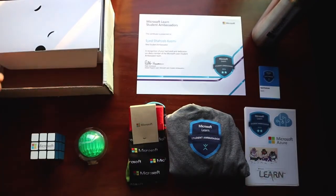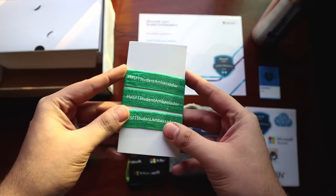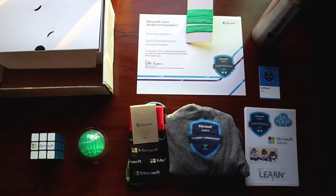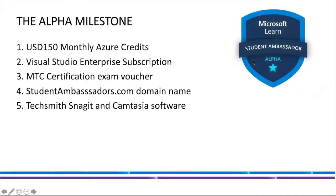Your first set of rewards will be received when you become an Alpha Microsoft Learn Student Ambassador — that is your first milestone. How do you achieve this? You will have to finish a learning path on the Microsoft Learn platform. This platform is one of the most resourceful platforms I have ever visited and it consists of information on every Microsoft technology out there. A learning path is an accumulation of multiple modules within the domain of the technology you choose to learn. On doing this, you receive the following benefits.